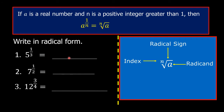The denominator 3 becomes the index. So our answer is the cube root of 5. In number 2, the denominator 2 becomes the index. So our answer is the square root of 7.